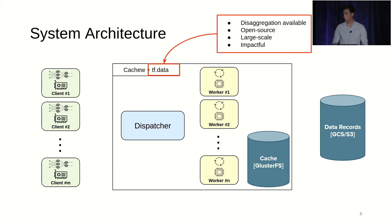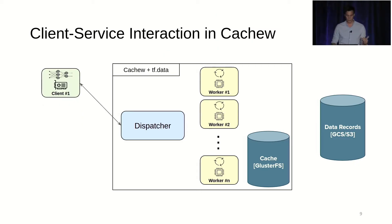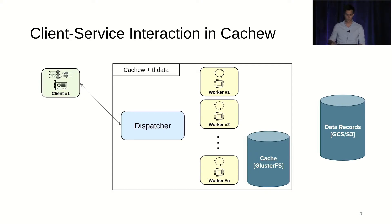How do the client and the service interact in CacheU? We represent clients here as having one accelerator, but you can actually have multiple accelerators and multiple clients tied to the same job — so it can be as distributed as you really want.